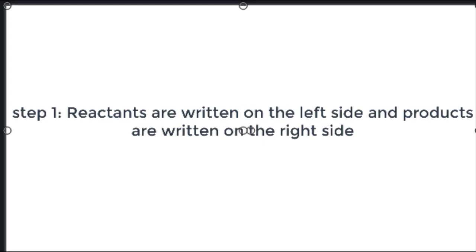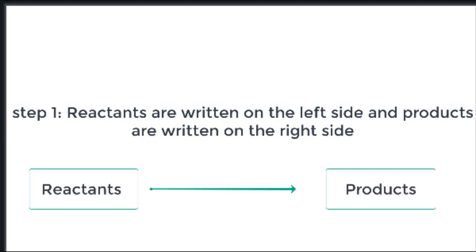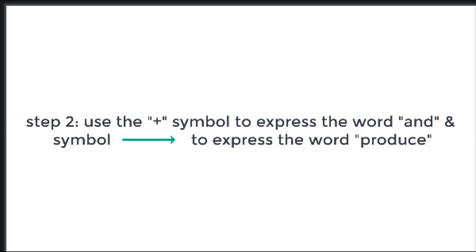Step 1. Reactants are written on the left side, and products are written on the right side. Step 2. Use the plus symbol to express the word and, and the arrow symbol to express the word produce. So you have to write the reaction in this way: Reactant 1 plus reactant 2, arrow, product 1 plus product 2.